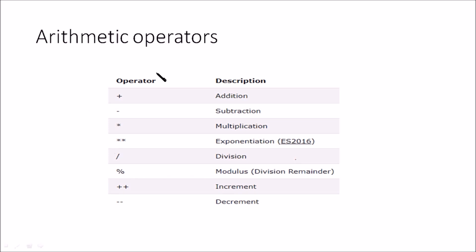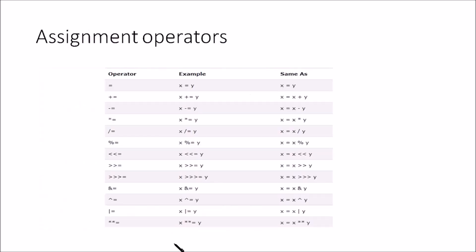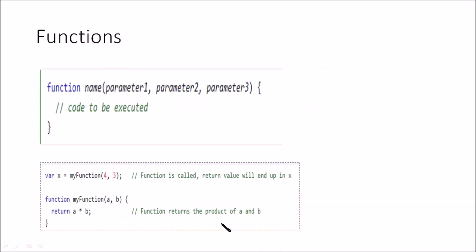Regarding arithmetic operators, almost all the standard arithmetic operators are available in JavaScript: addition, subtraction, multiplication (star), exponentiation (star-star), division (slash), modulus operator, increment, decrement, etc. There are also assignment operators: plus-equal means x = x + y, minus-equal means x = x - y, and so on. Some examples of these are shown as well.